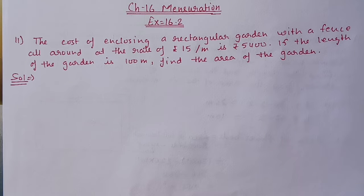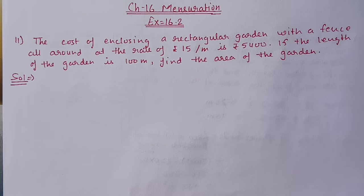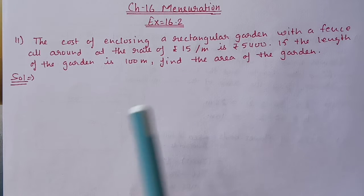Hello students, we are doing Chapter 16 Mensuration, Exercise 16.2. In today's video we will start from Question 11. The cost of enclosing a rectangular garden with a fence all around at the rate of rupees 15 per meter is 5400 rupees. If the length of the garden is 100 meters, find the area of the garden.